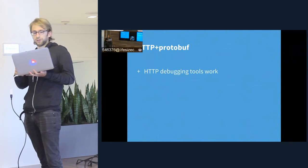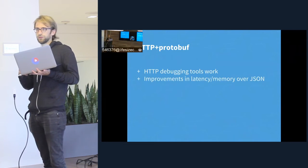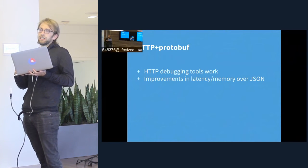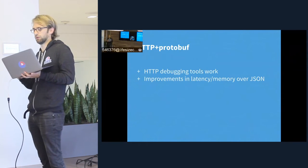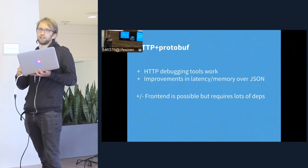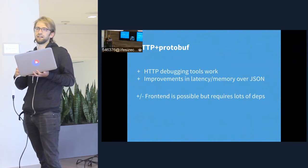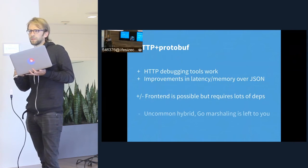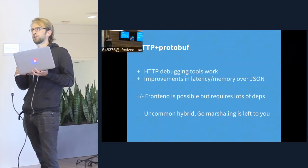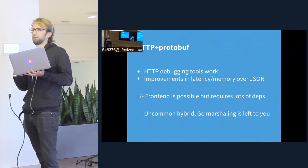Some pros and cons of HTTP with Protobuf: you can still use all the standard HTTP debugging tools to diagnose and explore things at the transport layer. And we have improvements in efficiency over using JSON for serialization. Where it becomes more awkward is implementing frontends — it's possible with JavaScript, but there are a lot of dependencies required and as I mentioned it's not the most stable or performant. It's also not that common, so a lot of the marshaling is left to you. The Go Protobuf support is not really first-class — we've had a few issues with the Go Protobuf library that we've needed to patch.